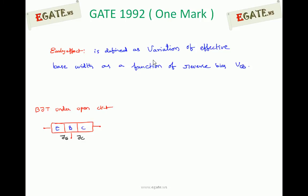First, we consider a BJT under open circuit. BJT is a three terminal device consisting of emitter, base, and collector. If no voltages are applied across the terminals, that is under open circuit, every BJT consists of two PN junctions: one is the emitter base junction JE, and the other is the collector base junction JC. Under open circuit, both junctions have a built-in potential barrier height V0.